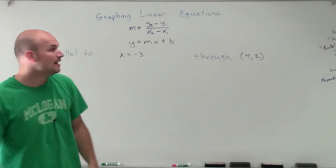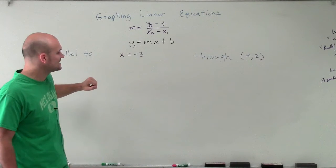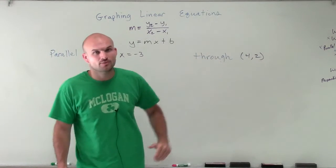The line must be parallel to x equals negative 3, but go through the point 4 comma 2.